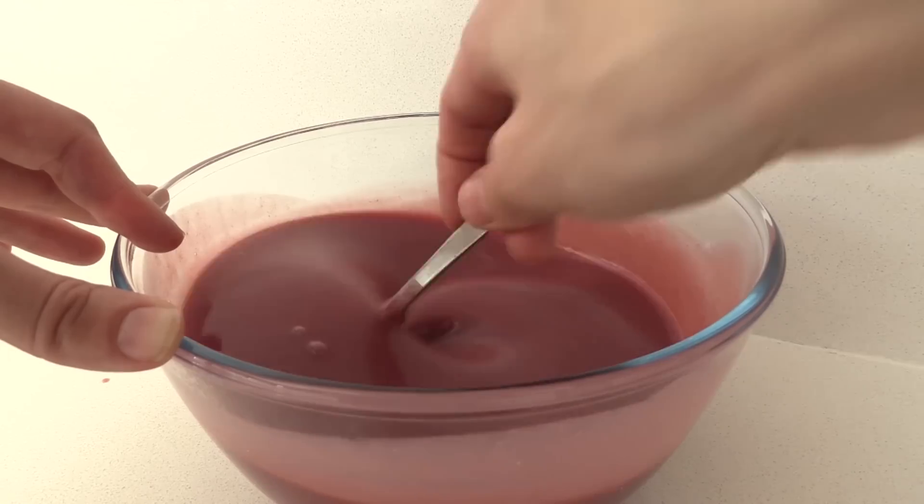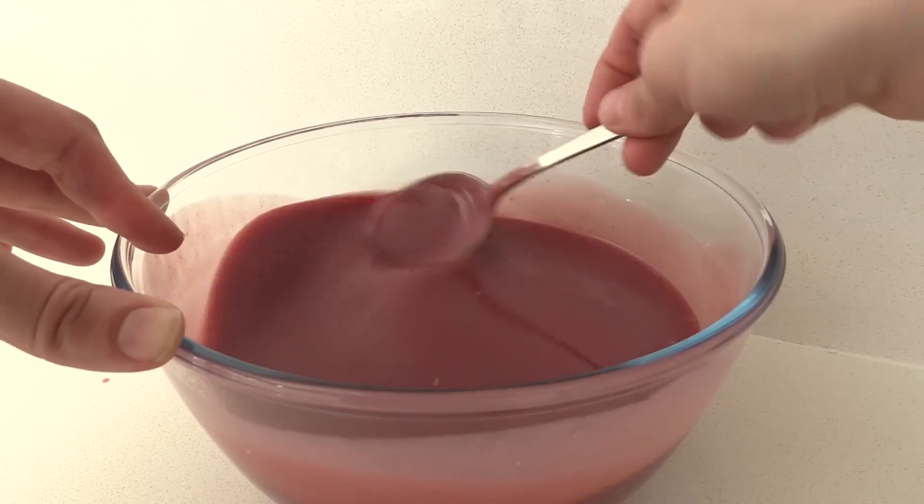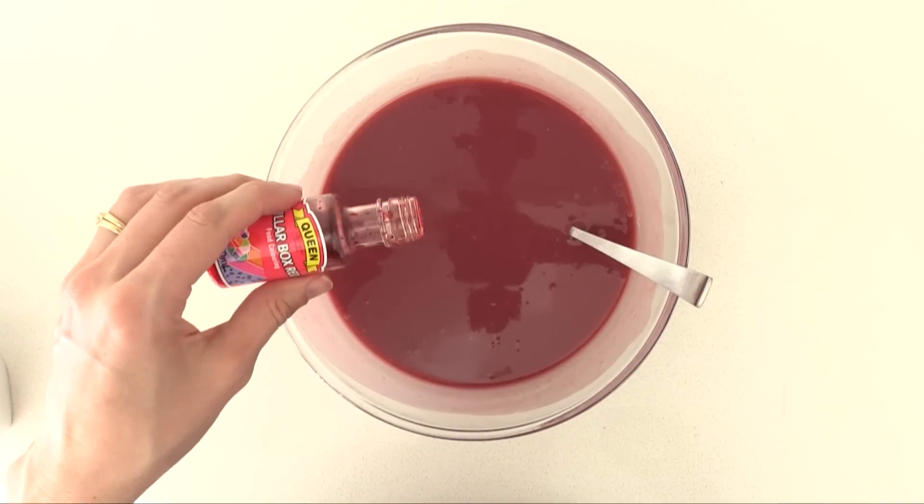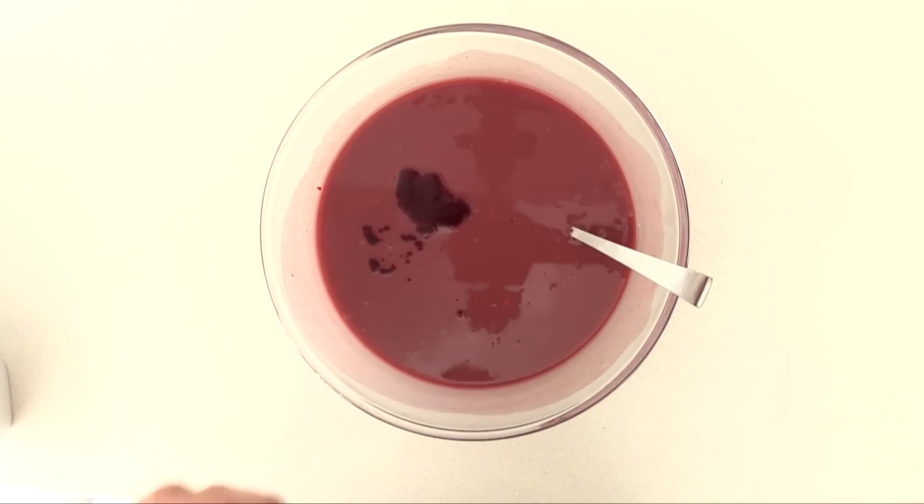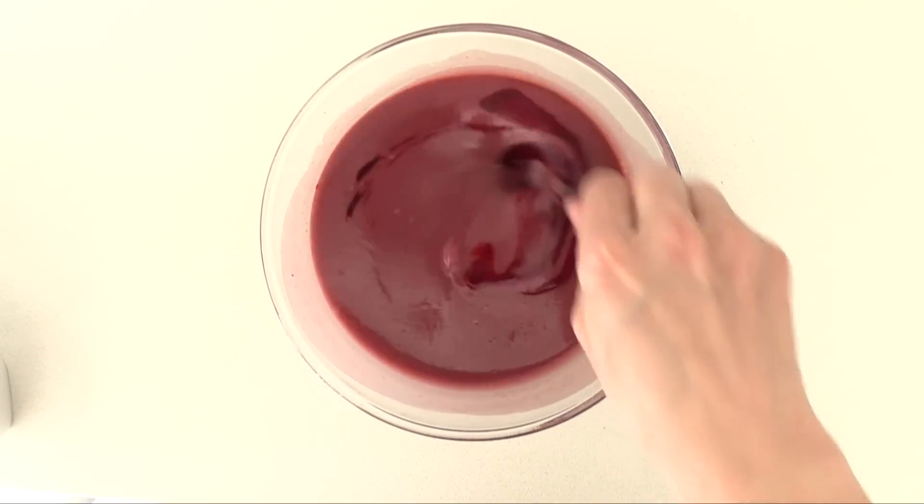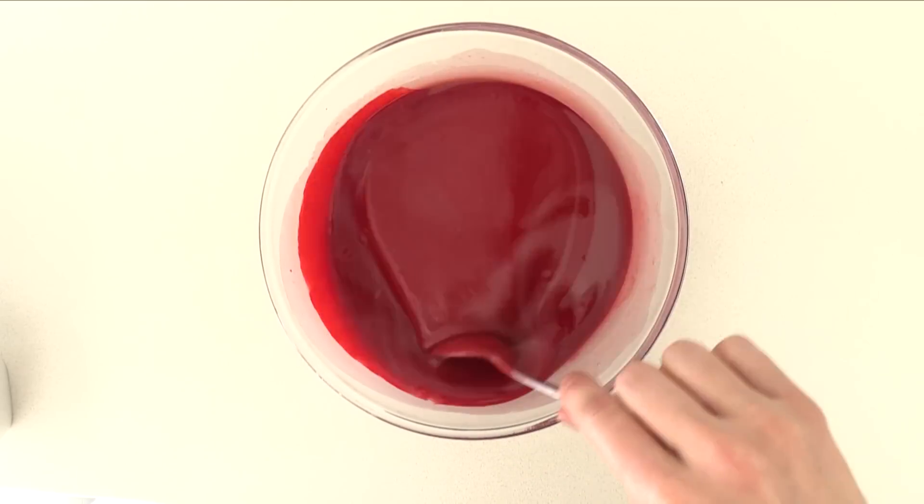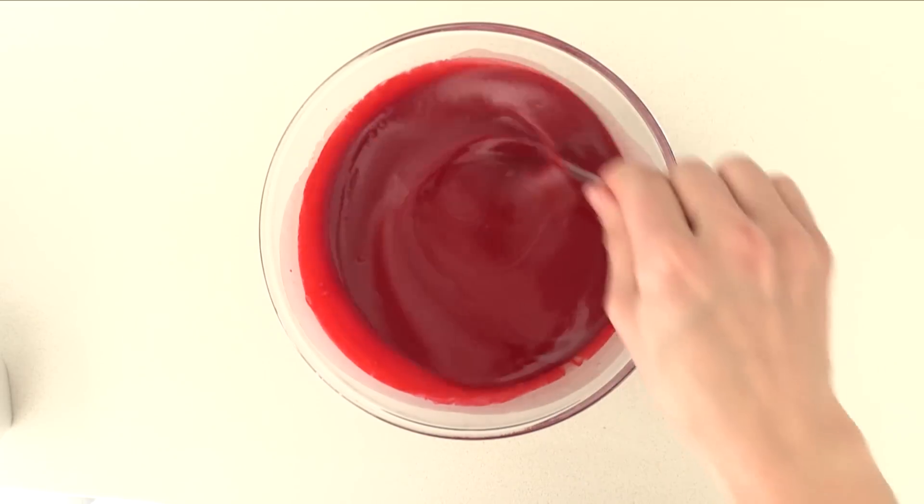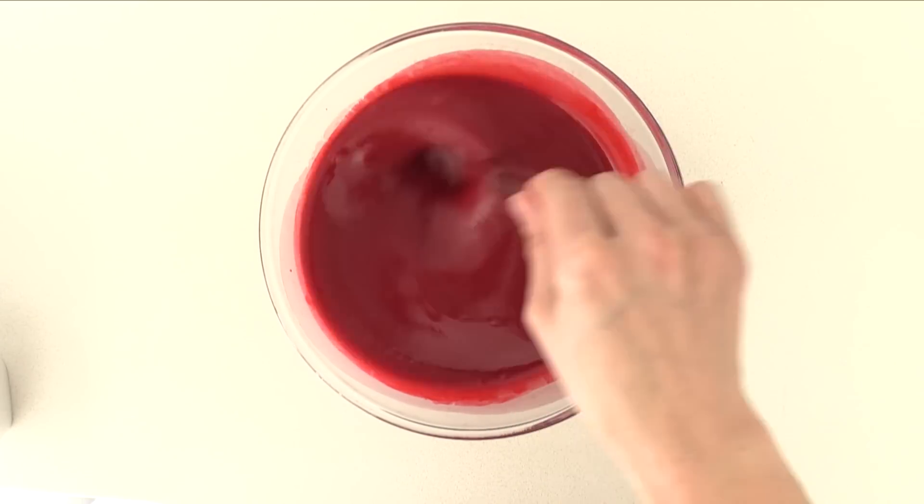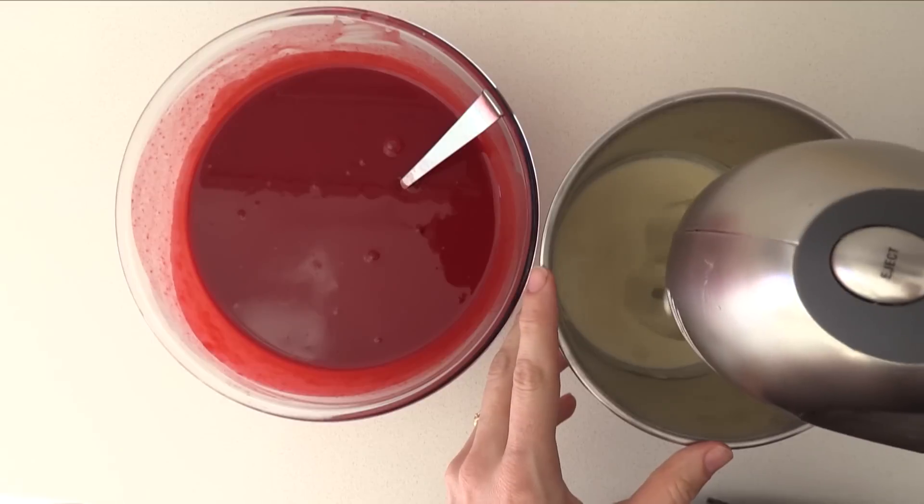And now we need to make it a brighter YouTube red. So to do that I am adding some liquid red food colouring, you can use gel colour if you have that. And once you are happy with the colour we just want to leave that to cool down to room temperature. You don't want to put it in the fridge because that will set the gelatin. We just want it to cool to room temperature so we can fold in the cream without it melting.